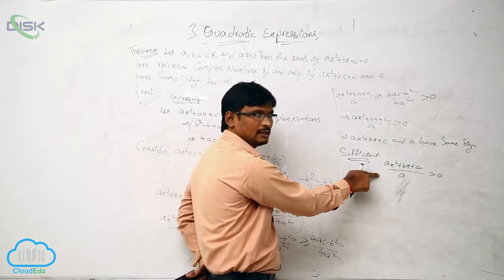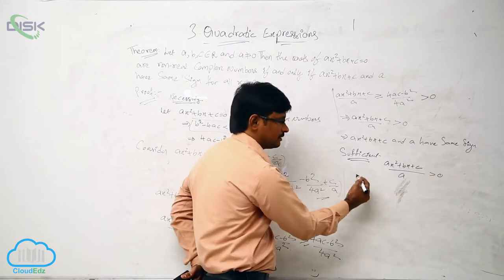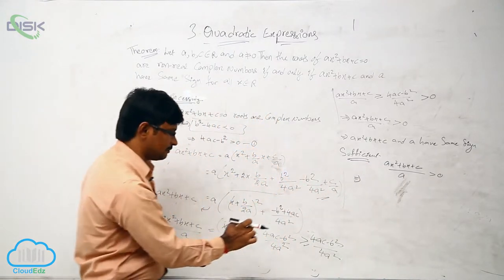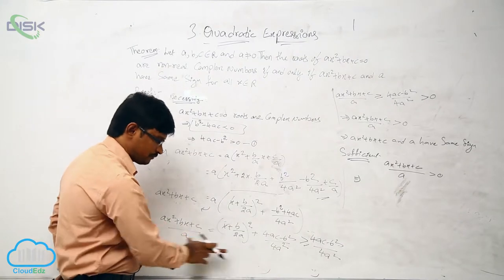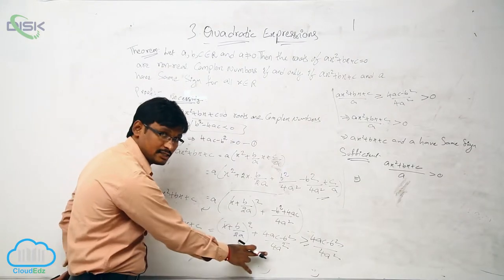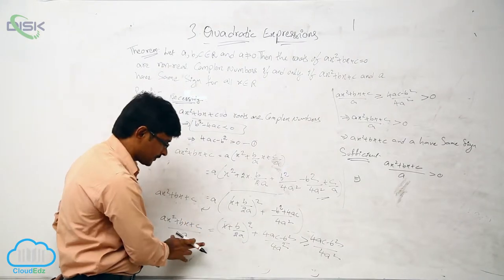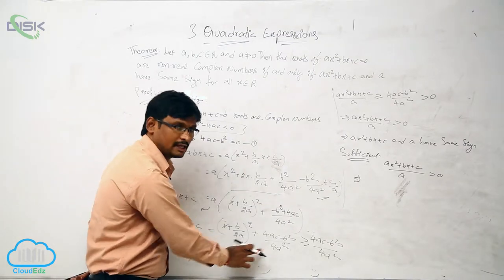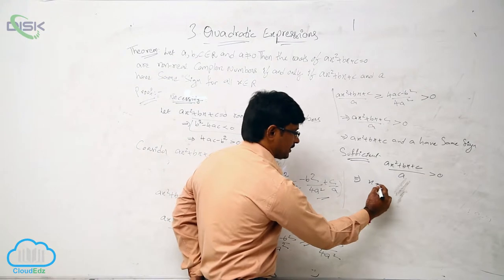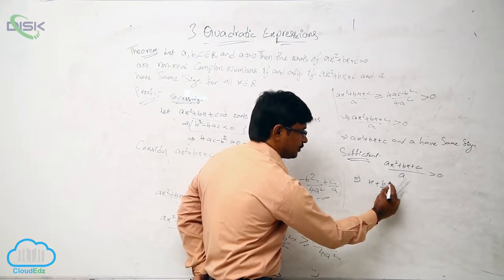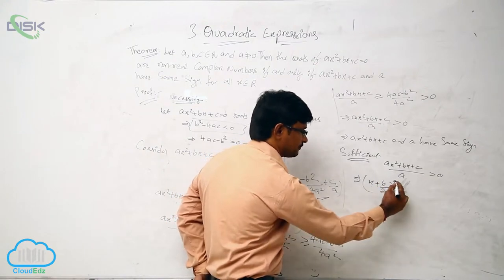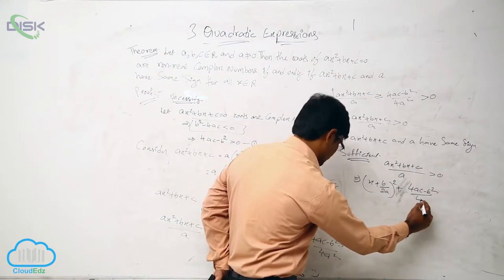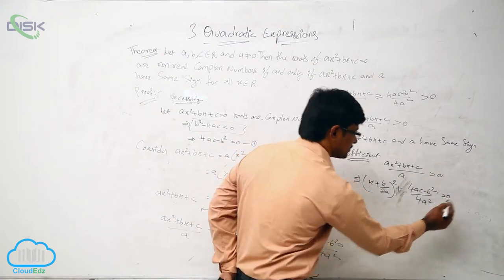Negative divided by negative is greater than 0; positive divided by positive is greater than 0. Now, Ax squared plus Bx plus C divided by A — we can substitute the completed-square form: x plus B over 2A, whole squared, plus 4AC minus B squared over 4A squared, and this is greater than 0.